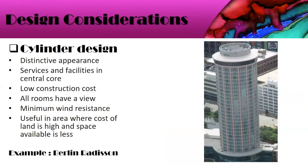The third building design style to consider is the cylinder design. As you can see in the picture, it is aptly named — it has a very distinctive appearance. All services and facilities are located at the central core and the rooms are on the periphery, so all rooms have a view facing outwards. This style has minimum wind resistance, so wear and tear is very low. It is very useful in areas where land cost is high and available space is limited. An example is the Radisson Hotel in Berlin.